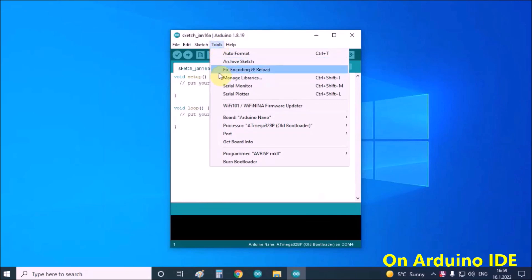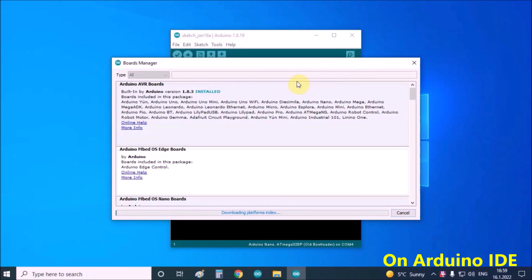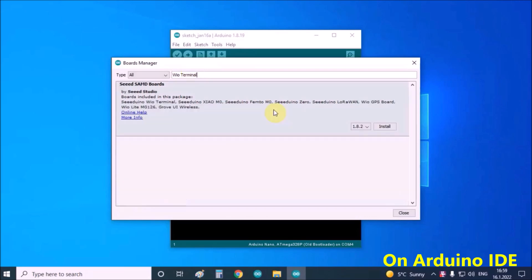Now click on Tools, Boards, Boards Manager. In Boards Manager we need to search WIO Terminal and install it.